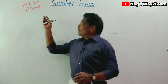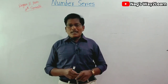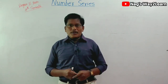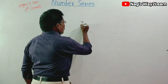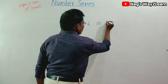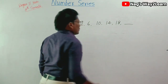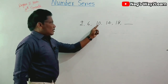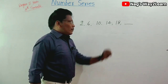In Number Series, there are two types. In the first type, a series of numbers is given and you need to find the next number. For example, look at the series 2, 6, 10, 14, 18, dash.